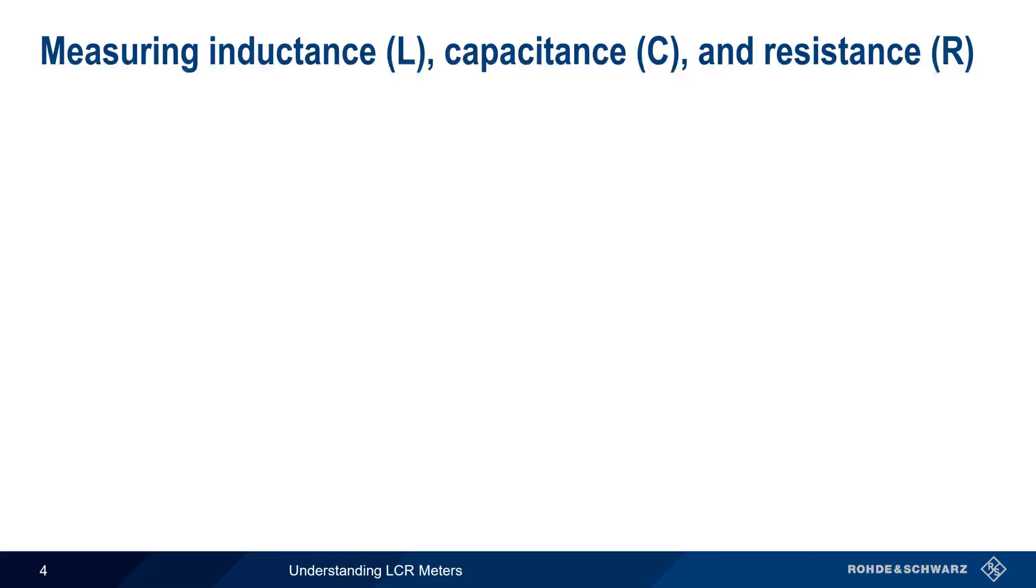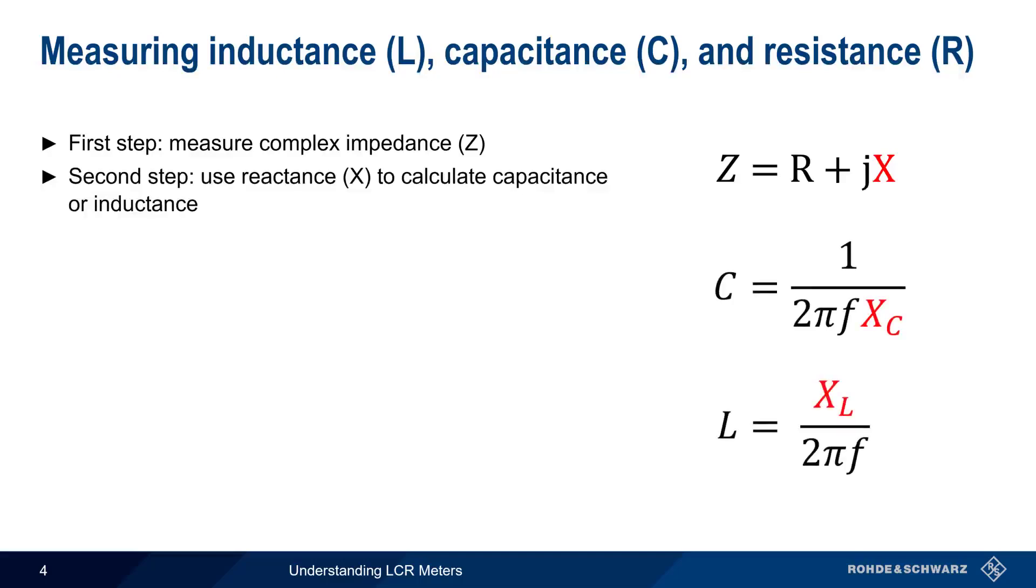Determining the values of inductance, capacitance, and resistance involves two steps. First, we determine the complex impedance, either in Cartesian or in polar form. The next step is to convert the reactive part of this complex impedance into capacitance or inductance, again using some simple formulas.